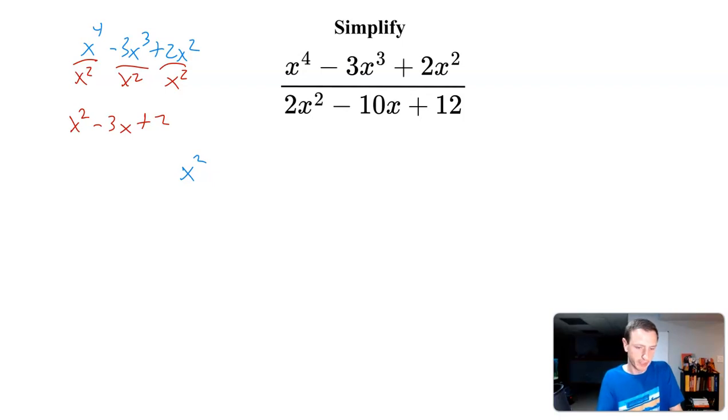x to the fourth over x squared is 4 minus 2, which is 2. Negative 3x to the third over x squared is negative 3 over 1, so we keep that negative 3. x to the third over x squared, 3 minus 2 is 1. And then x squared will cancel on that last term, so we're just left with plus 2. So factoring out that x squared, I am now left with x to the second minus 3x plus 2 on the top.